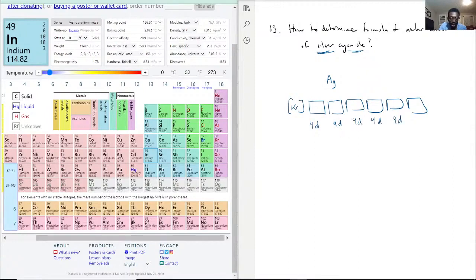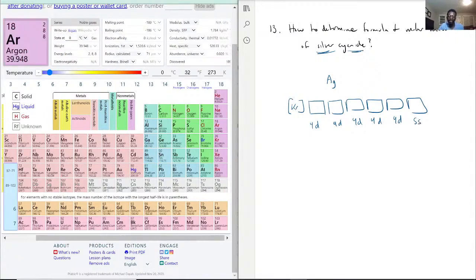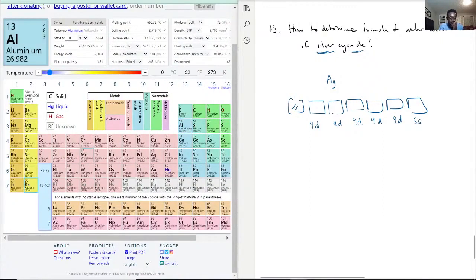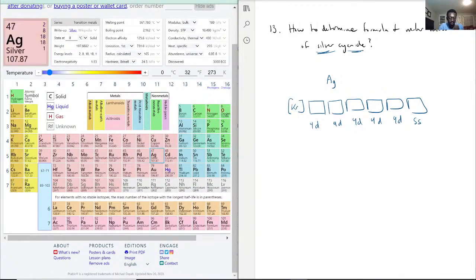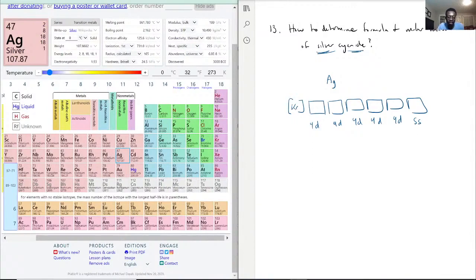And it will now be 5s because you can see here it's on the fifth row. It's going to be 5s2 or so we think in the beginning, and 4d9 it seems.